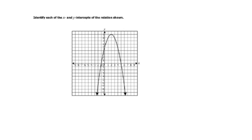This problem asks us to identify the x and y intercepts of a relation. Remember, intercepts are where you cross the x-axis and where you cross the y-axis. The x-intercepts are also called roots, solutions, or zeros. I click those two x-intercept points, and then also click the y-intercept. In this case there are two x-intercepts and one y-intercept.